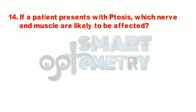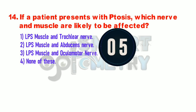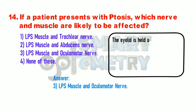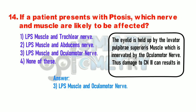Q14. If a patient presents with ptosis, which nerve and muscle are likely to be affected? 1. LPS muscle and trochlear nerve. 2. LPS muscle and abducens nerve. 3. LPS muscle and oculomotor nerve. 4. None of these. The eyelid is held up by the levator palpebrae superioris muscle, which is innervated by the oculomotor nerve. Thus, damage to cranial nerve 3 can result in muscle paralysis as well as ptosis.